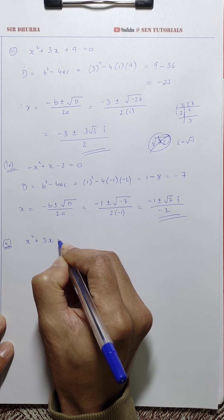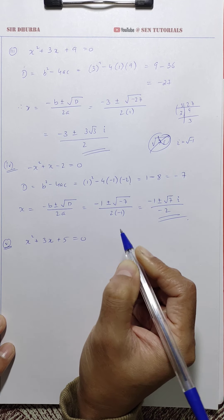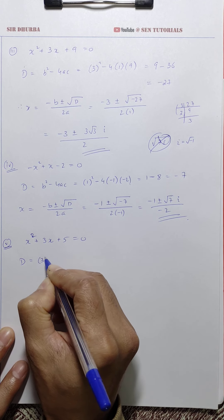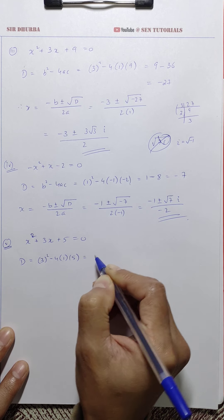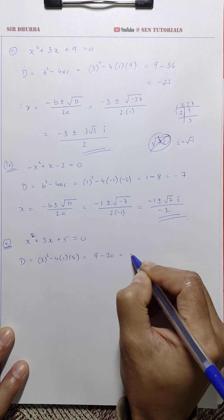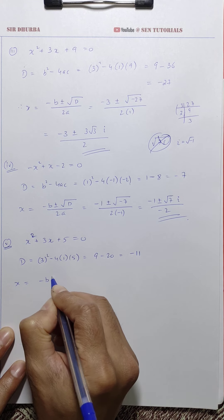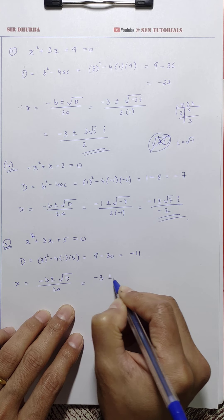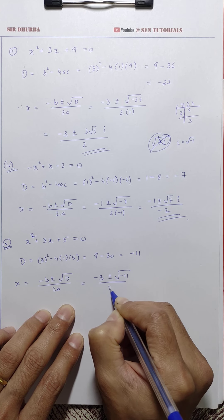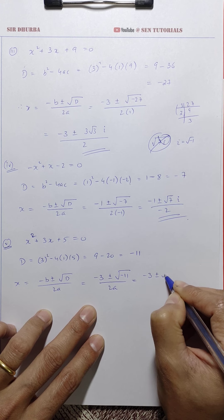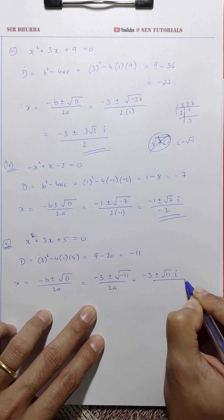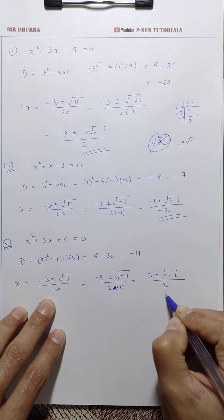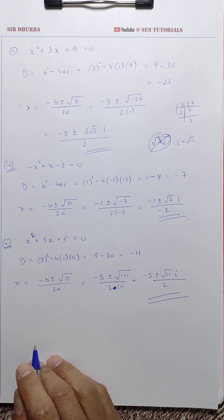Question 5: x² + 3x + 5 = 0. D = b² - 4ac = 9 - 4(1)(5) = 9 - 20 = -11. Therefore x = (-b ± √D) / 2a = (-3 ± √(-11)) / 2 = (-3 ± √11 i) / 2.